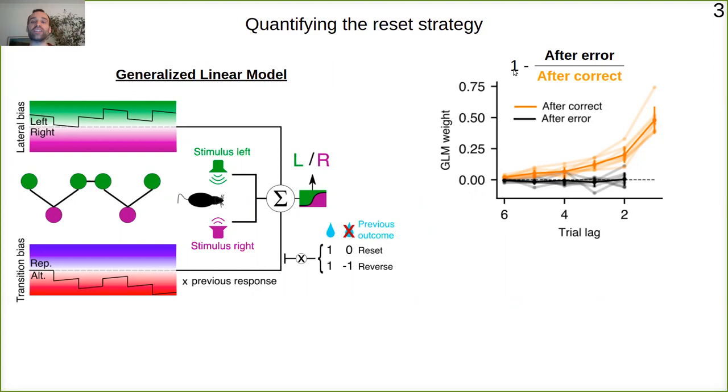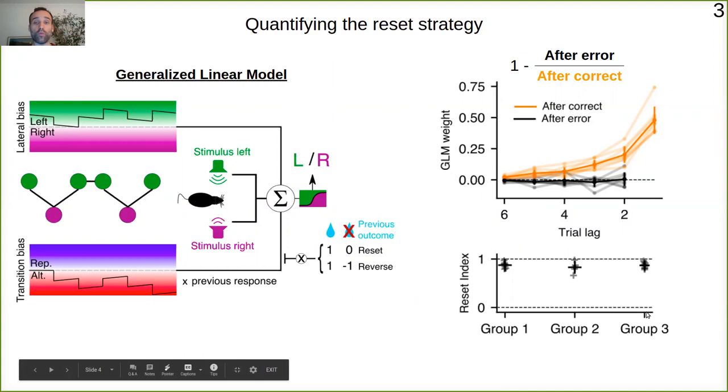We have quantified with a very simple formula this reset strategy. This would be our reset index, and we measured it for different task variants. These are tasks in which we change different parameters, but you can see that for all of them rats are pretty consistent and this strategy is robust across different variants.